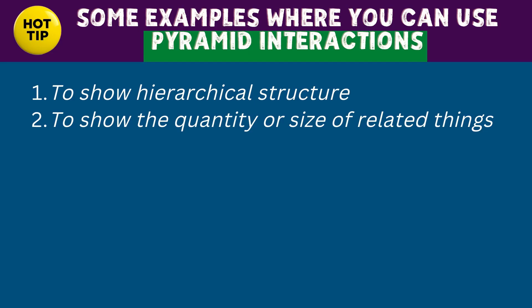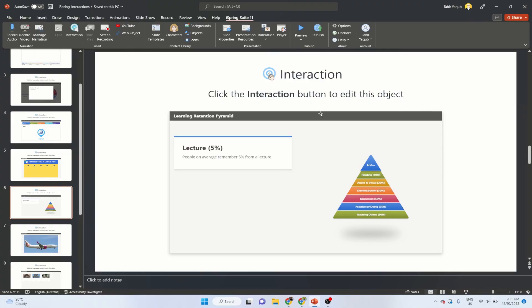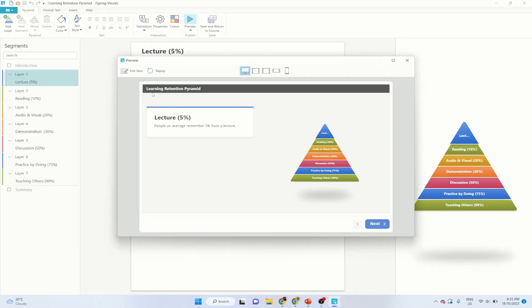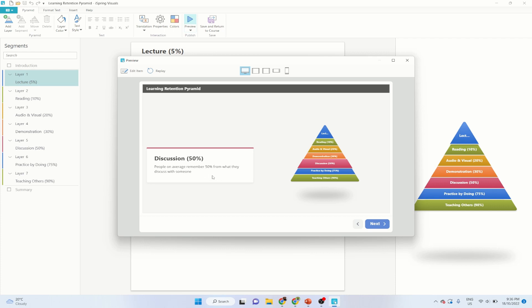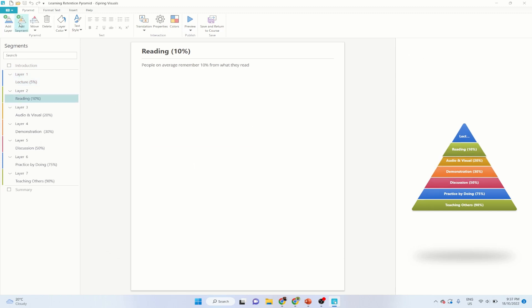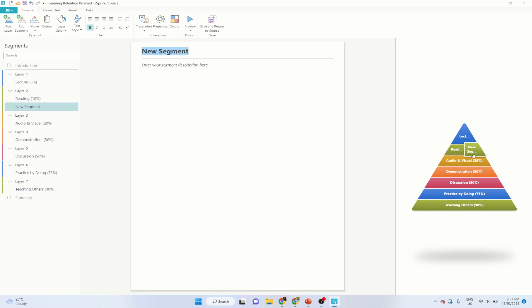The next one is Pyramid. These are the situations where you use pyramid interaction: to show a hierarchical structure or to show the quantity or size of related things. Let me preview — this is a learning retention pyramid showing how much information people retain from different learning activities. For example, a lecture gives 5% retention, reading gives 10%, listening and watching a video gives 20%, and so on. You can add another layer and add segments to that layer, and move layers up and down.